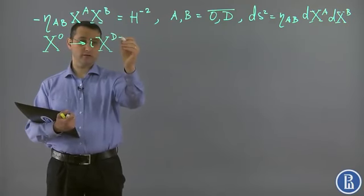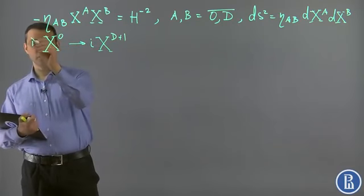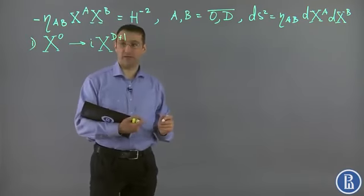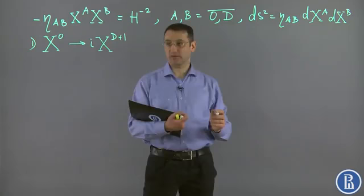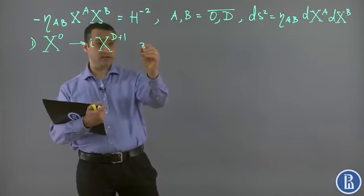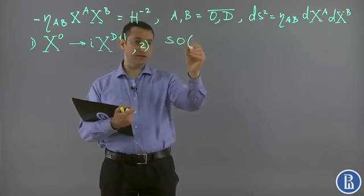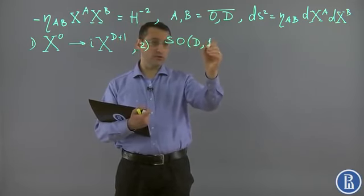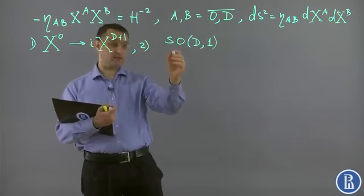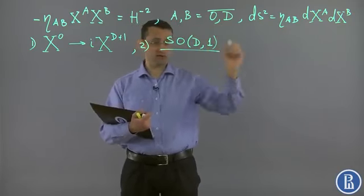That's the first way of observing. The second observation was made that this is a homogeneous space with isometry SO(d,1), which is the Lorentzian group of the d+1 dimensional Minkowski spacetime.